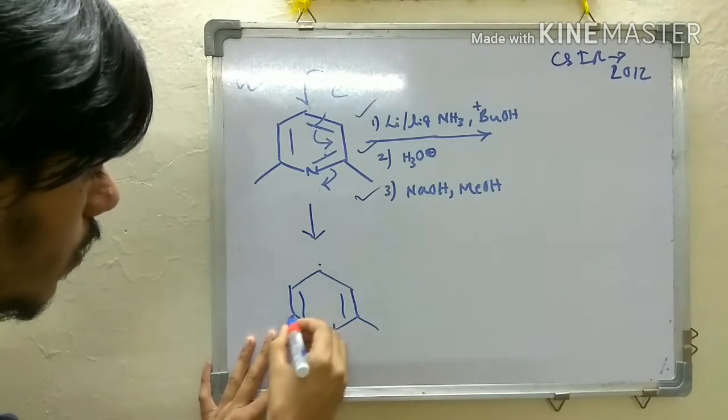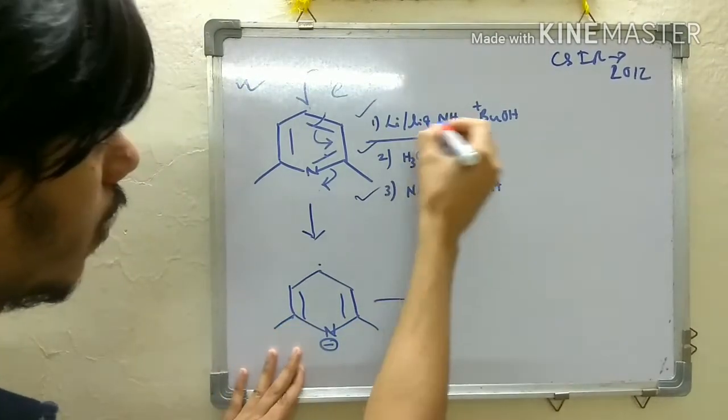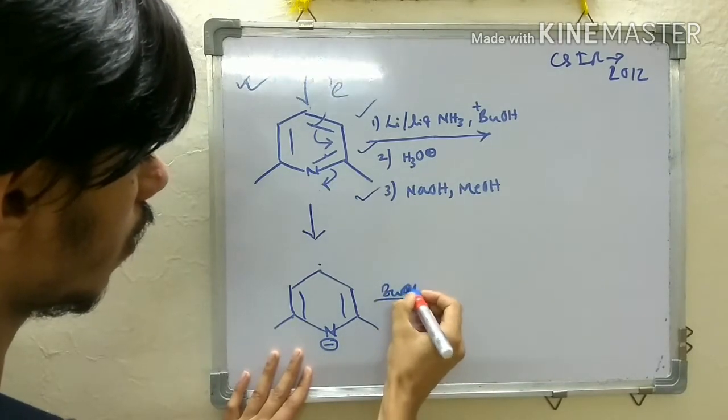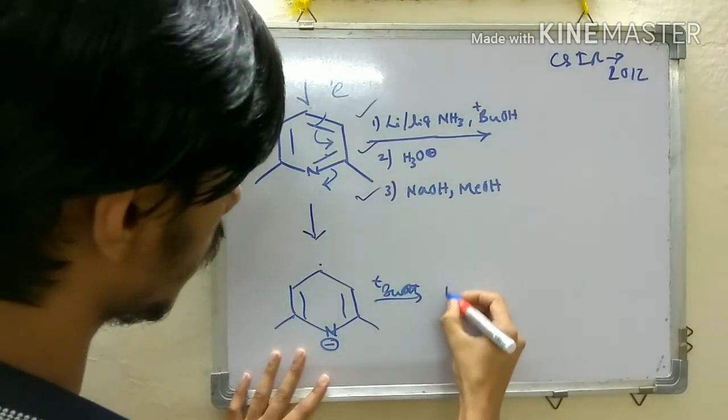This will be the first intermediate. Then tert-butanol is there, so it will protonate this nitrogen to give you NH.